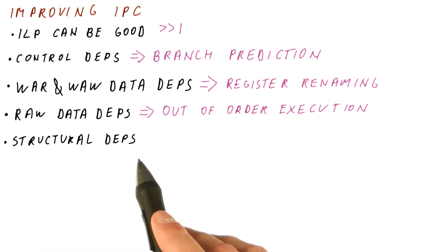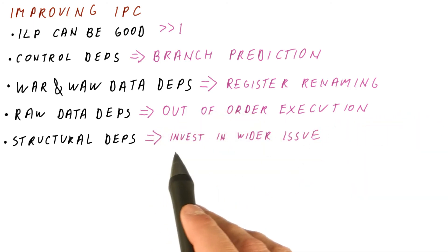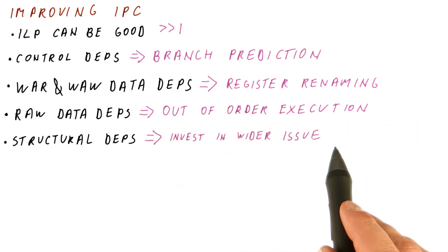And finally, there are these structural dependencies, which is when you cannot execute things simply because you don't have enough resources in the processor. But that can be solved simply by investing into a wider issue processor, meaning we need a processor that can handle a bunch of instructions in each cycle and not have to delay instructions just because it doesn't have resources for it.